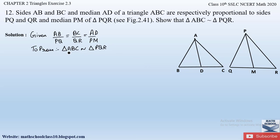There are four similarity criteria: Angle-Angle (AA), Angle-Angle-Angle (AAA), Side-Angle-Side (SAS), and Side-Side-Side (SSS). Using any of these four we can prove the two triangles are similar. We already have two sides that are proportional, so we need to either prove one included angle is equal or find a third proportional side. However, there is no direct way here to prove the third sides proportional.